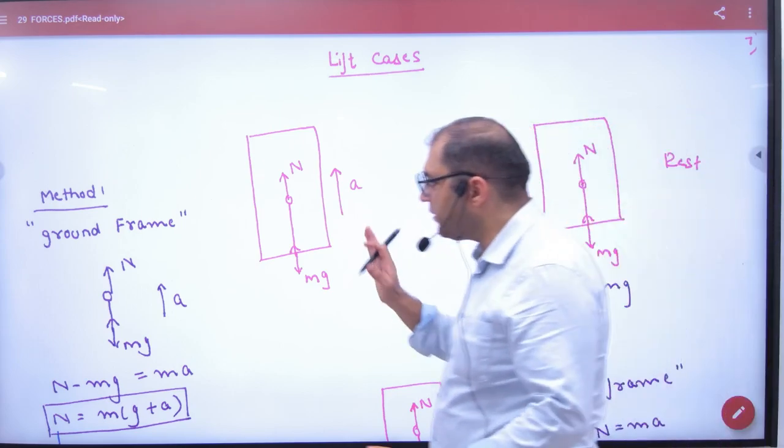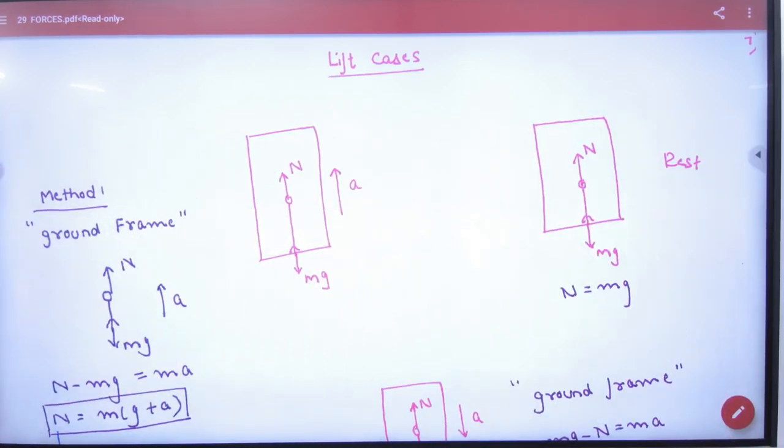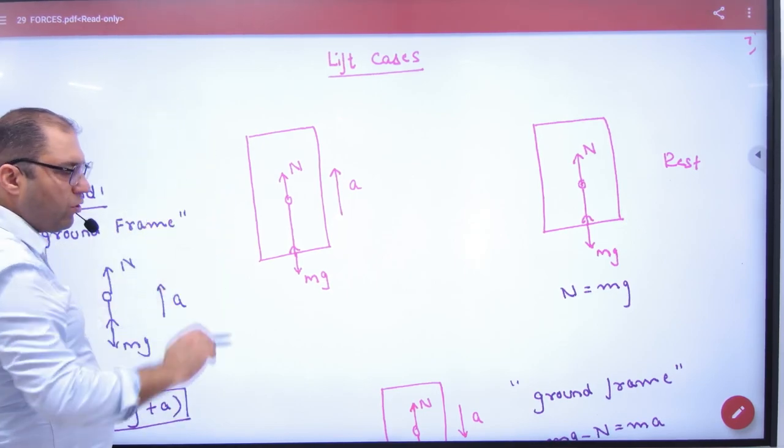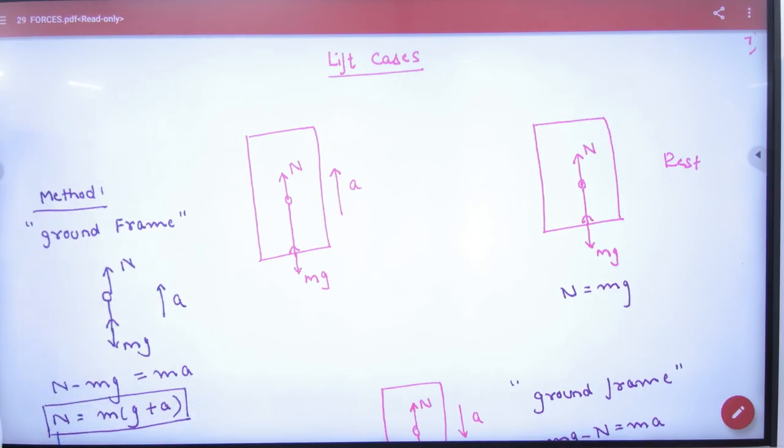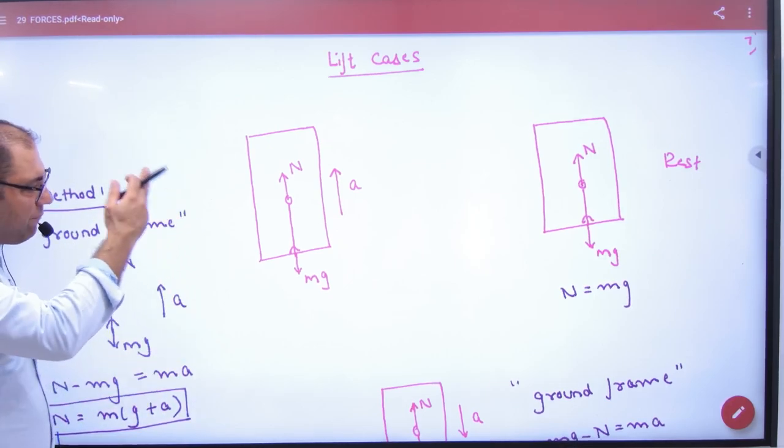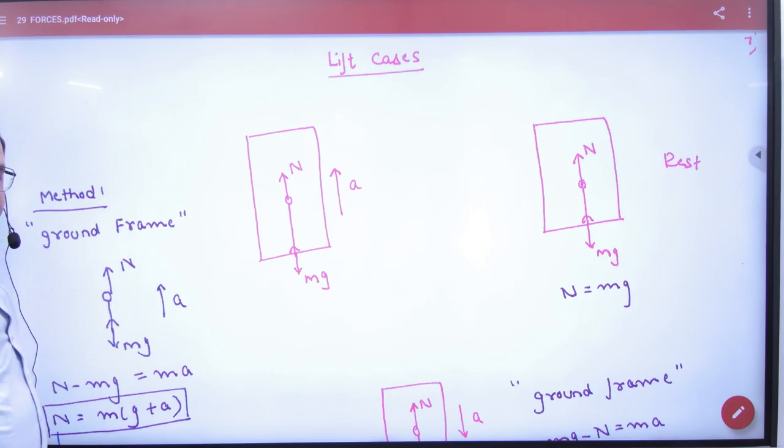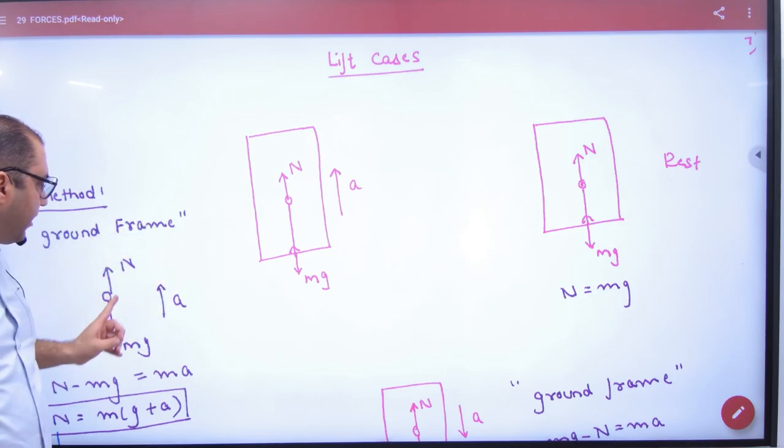Second, I told you that if lift, let us suppose, is accelerating upward. So if lift is accelerating on the upper side, then if you ask this man is showing you what? The upper side is accelerating. And if I say draw a free body diagram of the man.